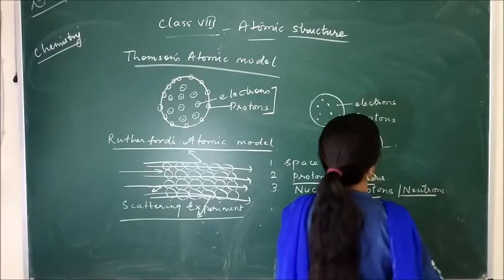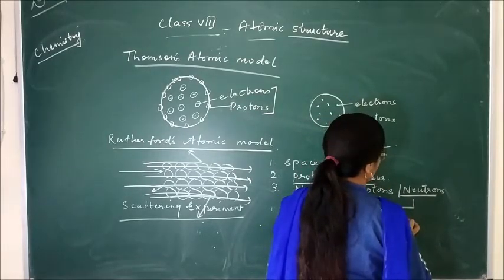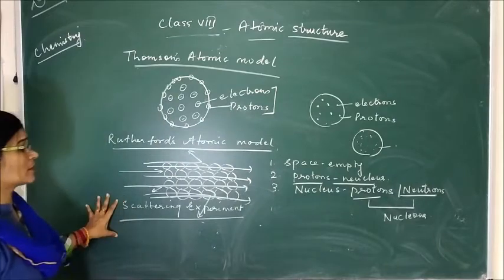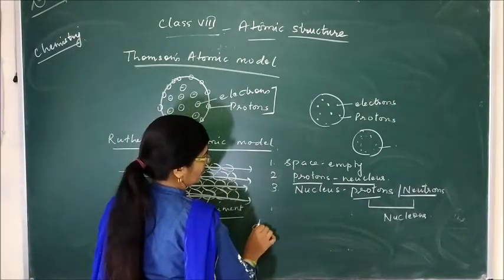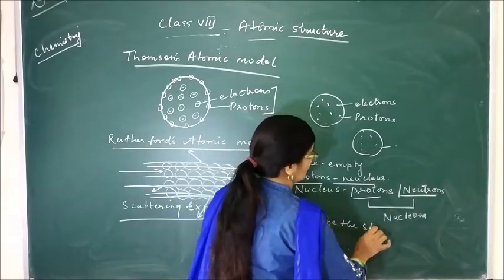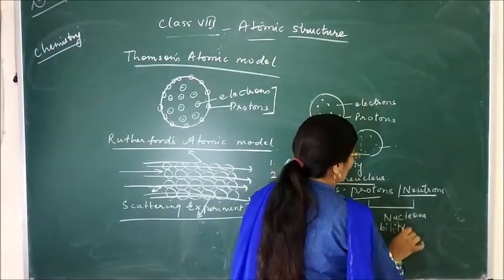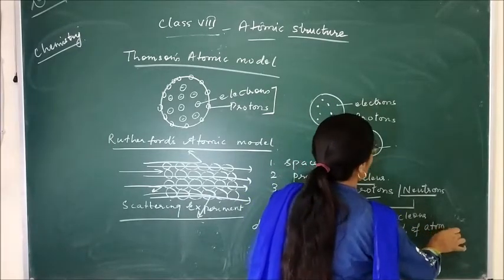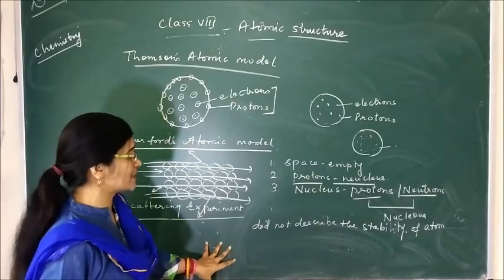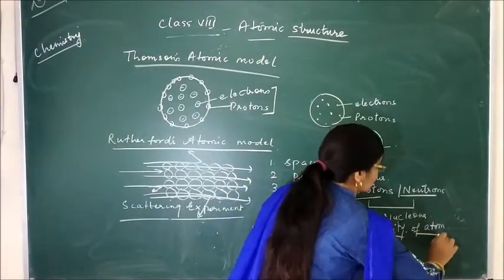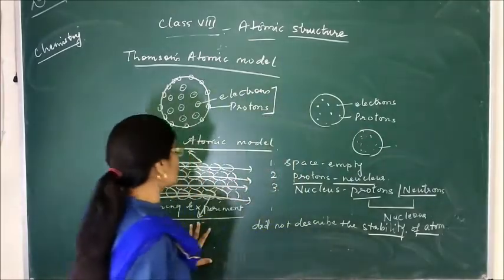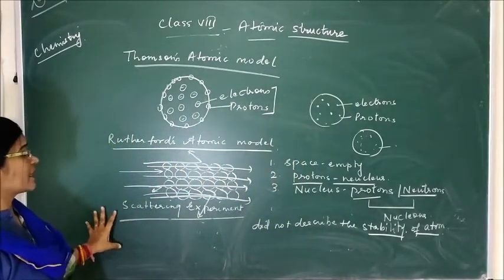Neutrons have no charge, and both protons and neutrons together he called nucleons. However, one drawback in his model was that he did not describe the stability of the atom. When the electrons revolve, due to their high energy state, the electrons which are present outside fall into the nucleus — as a result, the atom as a whole is not stable. Because of that instability, his model also was not proved properly and failed.